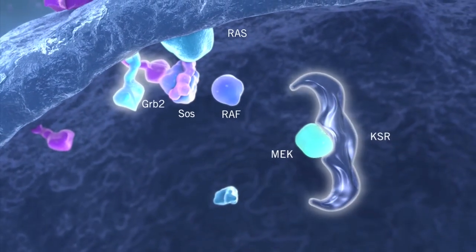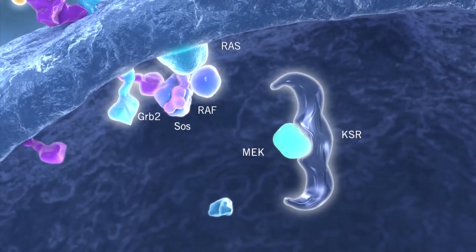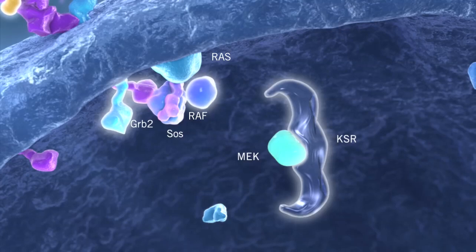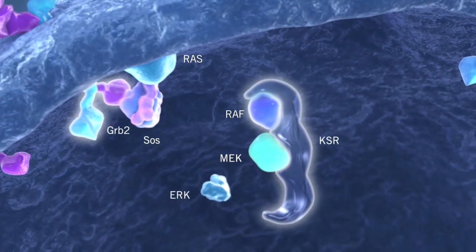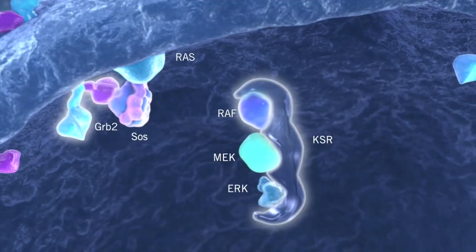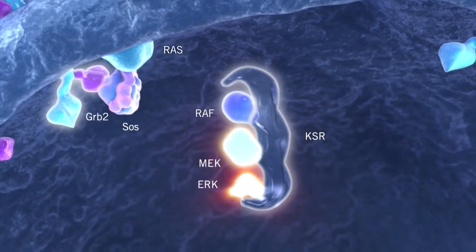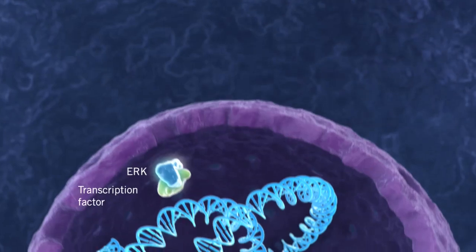The efficiency and duration of signal transmission is regulated by the scaffolding protein, kinase suppressor of RAS. RAS triggers a phosphorylation cascade involving RAF, MEK and ERK proteins, leading to ERK activation and translocation to the nucleus.